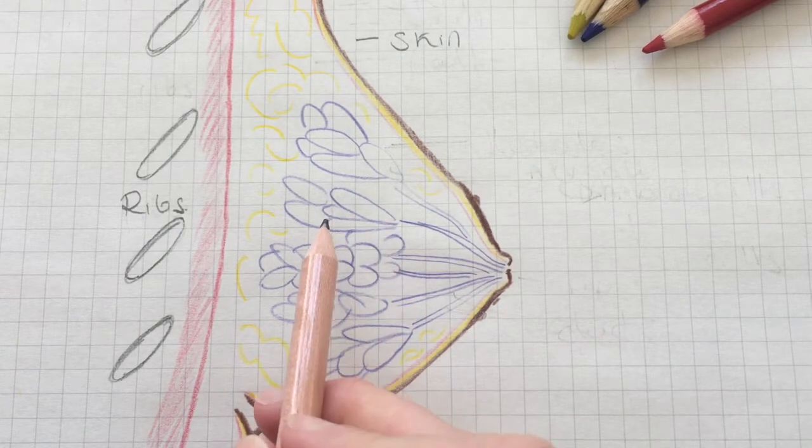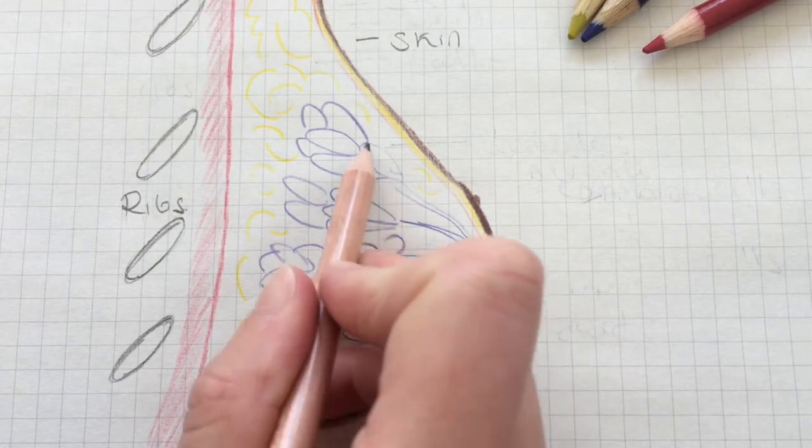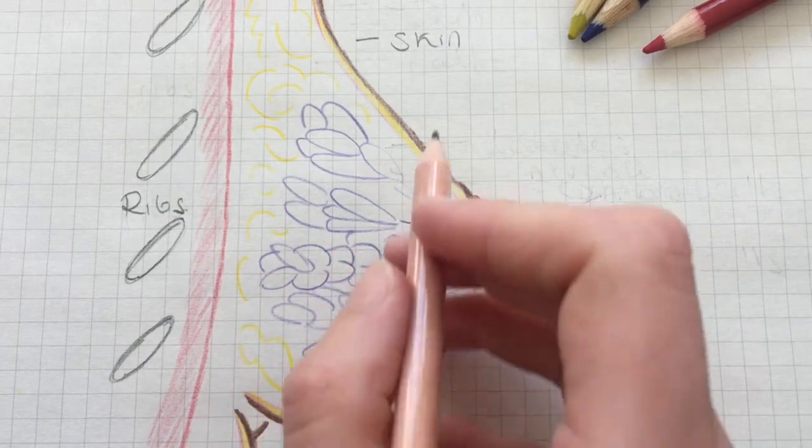The milk producing section of the breast consists of 15 to 20 lobules which are made up of balloon-like structures called alveoli.